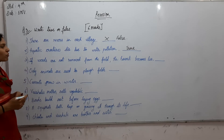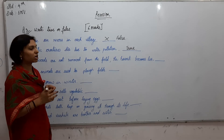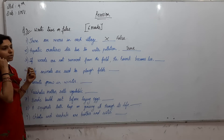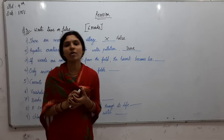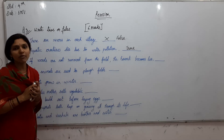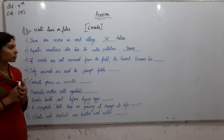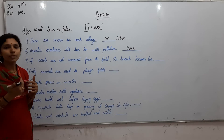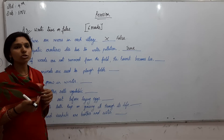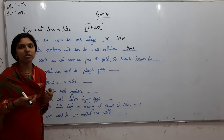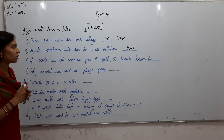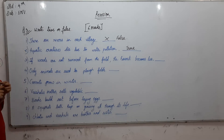Next: 'If weeds are not removed from the field, the harvest becomes less.' Yes, it is True. In the chapter 'Raju's Farm,' we read about a farmer who sows seeds in the soil, and after 20 days sprouts appear and the plants slowly grow. Along with those plants, some grass and weeds also grow.